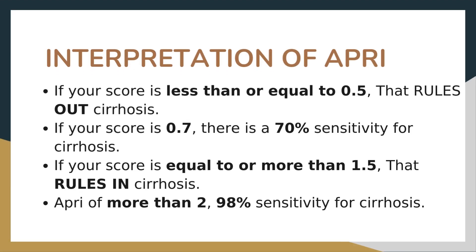Interpretation of APRI: If your score is less than or equal to 0.5, that rules out cirrhosis. If your score is 0.7, there is a 70% sensitivity for cirrhosis. If your score is equal to or more than 1.5, that rules in cirrhosis. An APRI of more than 2 indicates 98% sensitivity for cirrhosis.